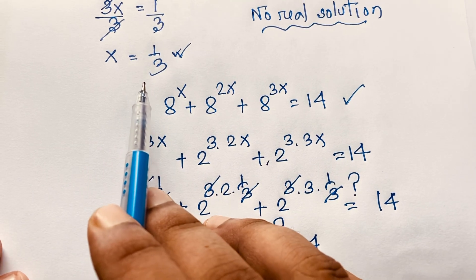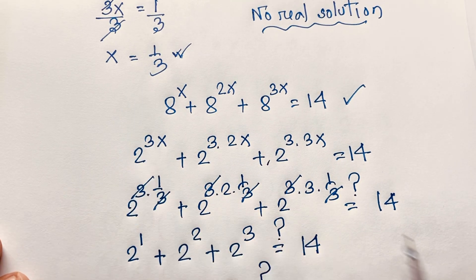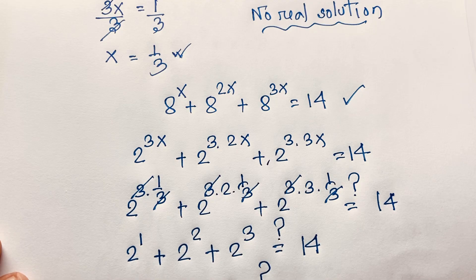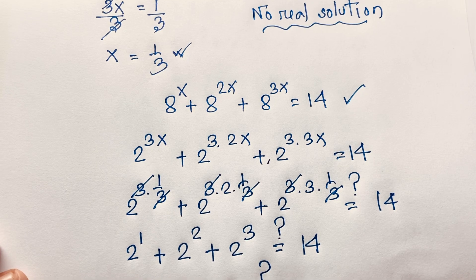So our final answer in this exponential Maths Olympiad question is x = 1/3. Thank you all. If you enjoyed this video, please subscribe to my channel for more interesting videos. Goodbye, take care!